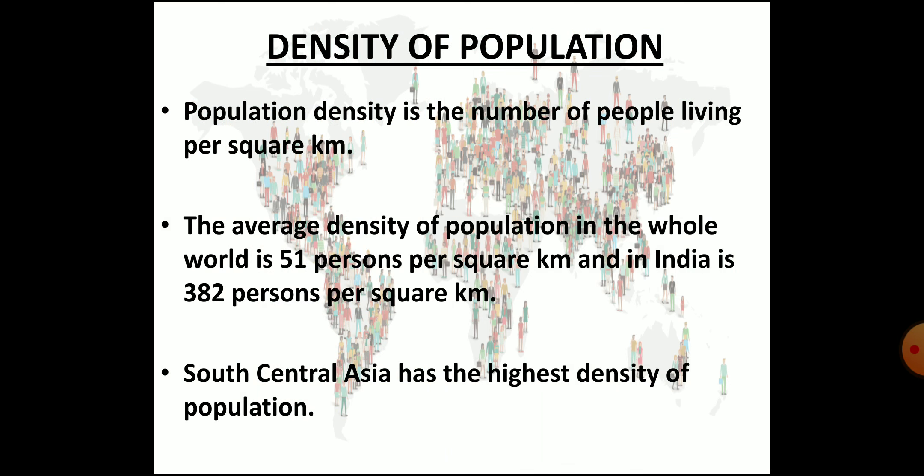Now let's learn about density of population. Density of population is the number of people living per square unit of area, usually expressed as per square kilometer. The density of population varies over the earth's surface. The average population density of the entire world is 51 persons per square kilometer. South Central Asia has the highest density, followed by East Asia and Southeast Asia. India's population density is 382 people per square kilometer.